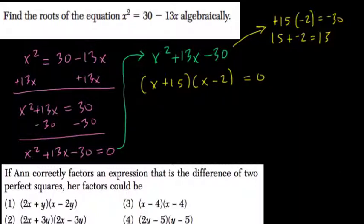Now, if this equals 0, then either x plus 15 equals 0, so x minus 2 equals 0, or they both equal 0. So, x plus 15 equals 0, and x minus 2 equals 0.